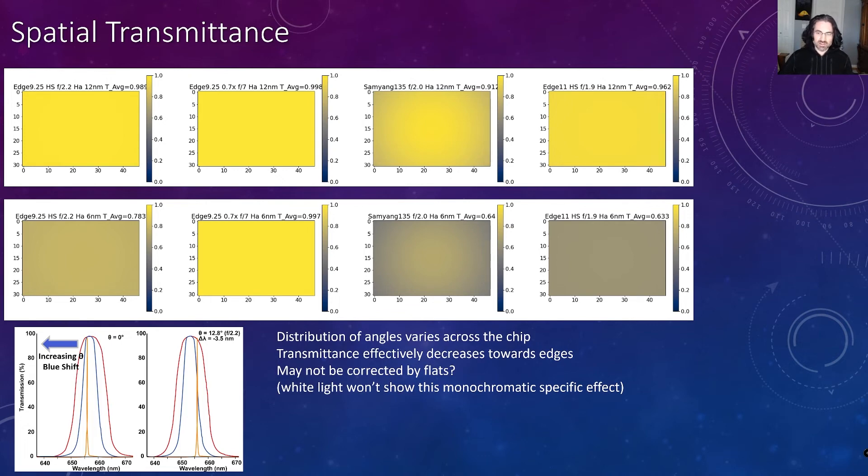However, I don't think this kind of effect is going to be corrected by flats, because if you use white light or even skylight, this particular response is based on a monochromatic line source and its transmission. Whereas if you're using a white light source, it'll just start transmitting light at this particular wavelength. So you're not going to see this fall off that is going to occur for a monochromatic source. So I can imagine this creating a lot of challenges, especially if you're doing a mosaic, and it's something that your flats may not correct for.